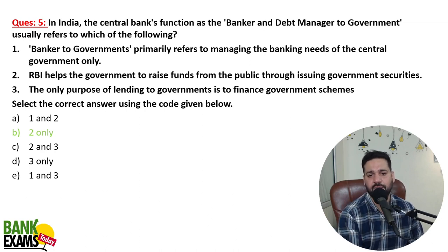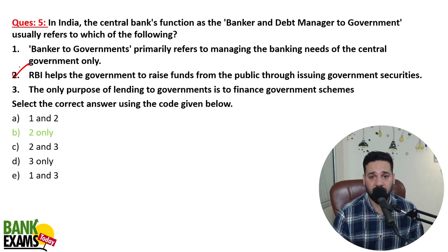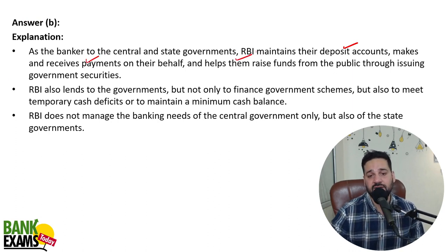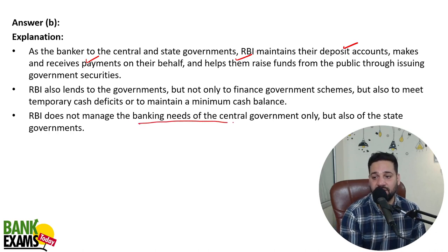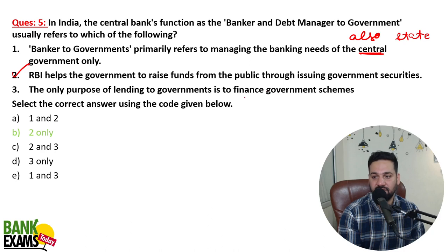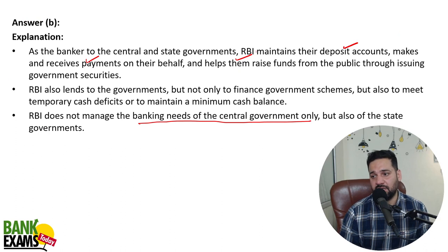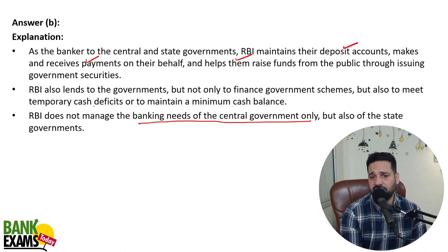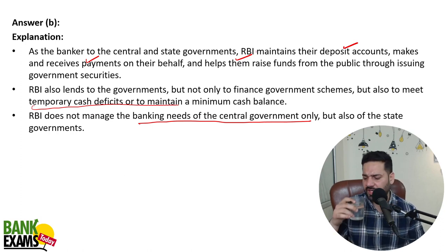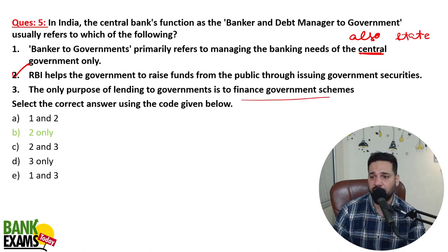RBI as banker to the government primarily refers to both the central and state governments. RBI maintains deposit accounts, makes and receives payments on their behalf, and helps raise funds through issuing government securities. RBI also lends money to governments. The first option is wrong because RBI manages banking needs of not only the central government but also the state governments. The third option is also wrong — the only purpose of lending is not just to finance government schemes; there are other purposes such as addressing temporary cash deficits.